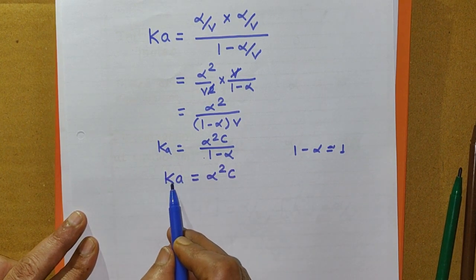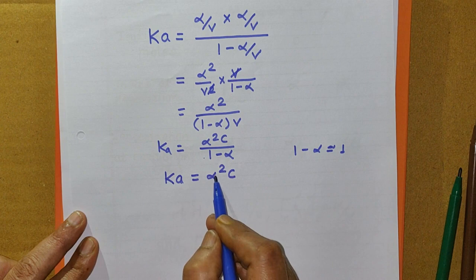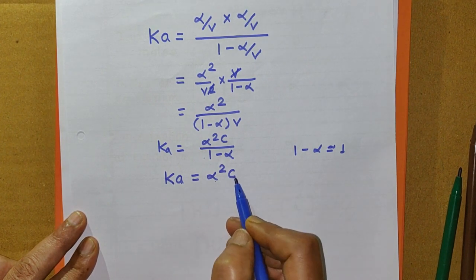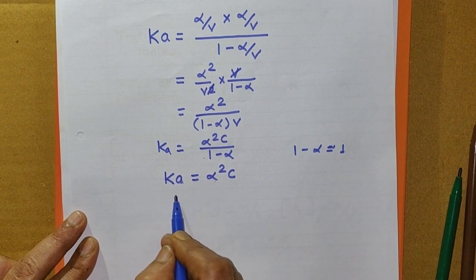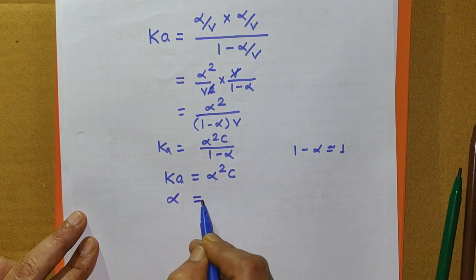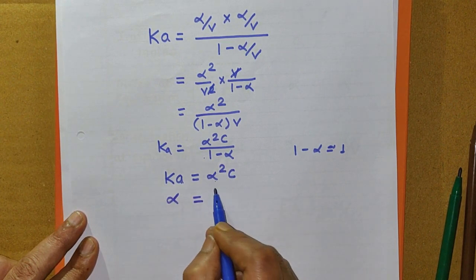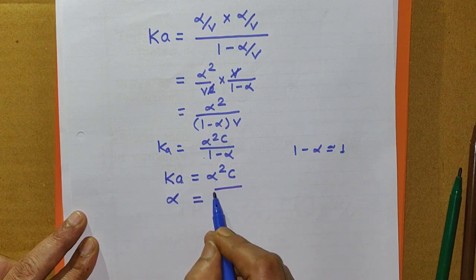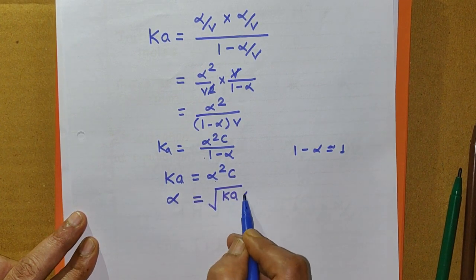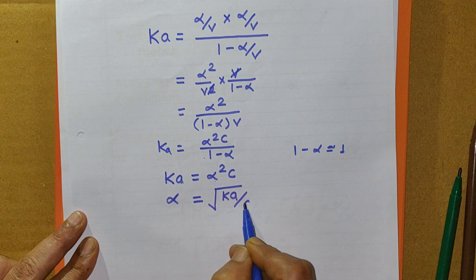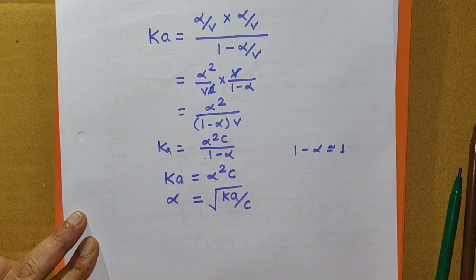So Ka equals alpha squared times C, where Ka is the dissociation constant of the acid, alpha is the degree of ionization, and C is the concentration of the solution. Rearranging in terms of alpha: alpha equals the square root of Ka divided by C.